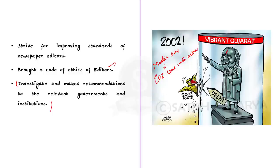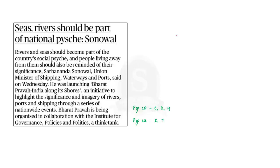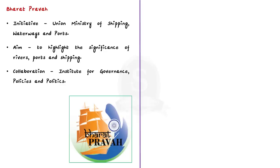Through this discussion, we saw some points regarding the Editor's Guild of India, which is a pressure group operating in the field of press. Now let's see this news article — yesterday the Union Minister of Shipping, Waterways and Ports launched an initiative called Bharat Pravag. The minister said that rivers and seas should become part of the country's social feelings, and the people living away from them should also be reminded of their significance. This particular initiative comes under the Union Ministry of Shipping, Waterways and Ports. It was launched to highlight the significance of rivers, ports and shipping inside Indian borders.